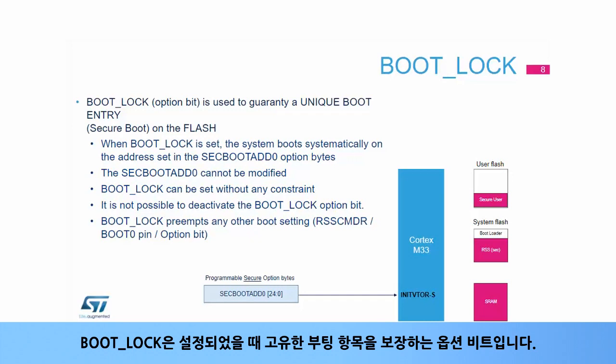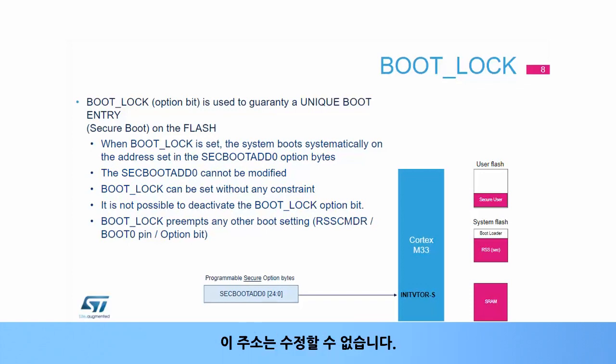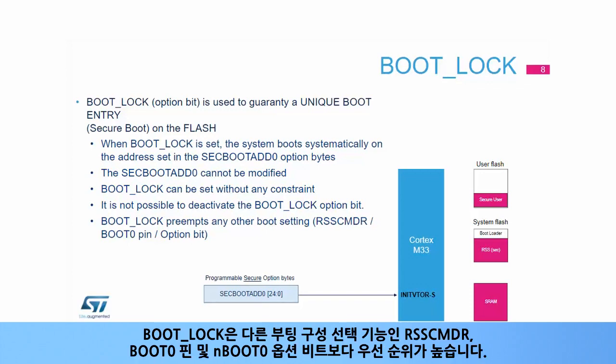Boot lock is an option bit that guarantees a unique boot entry when it is set. When boot lock is set, the system boots systematically on the address set in the SEC_BOOT_ADD0 option bytes. This address cannot be modified. Boot lock can be set without any constraint, but it is not possible to deactivate the boot lock option bit. Boot lock has precedence over other boot configuration selection features: RSS_CMDR, BOOT0 pin, and N_BOOT0 option bit.